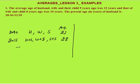Presently the average age of all three — husband, wife, and son — is 28 years. Total age equals average multiplied by number of observations: 28 into 3 equals 84 years. So the total present age of all three is 84 years.